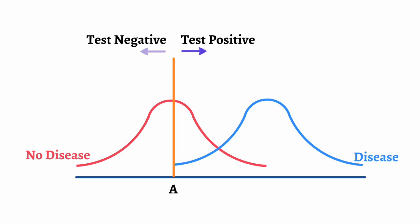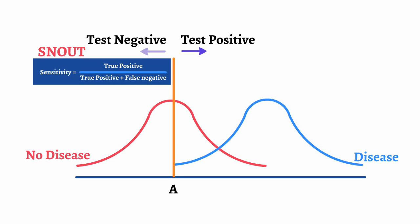You can remember this by the common mnemonic SNOUT: S represents sensitivity, N represents if negative, and it rules out disease. We calculate sensitivity as true positives divided by the sum of true positives plus false negatives. Another way to say this is true positives divided by the number of people who have the disease.